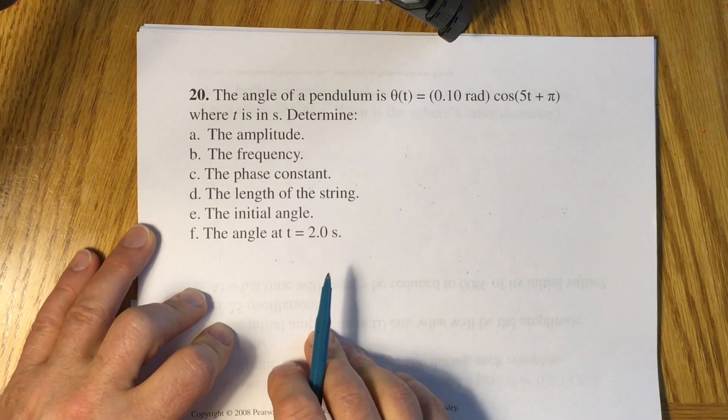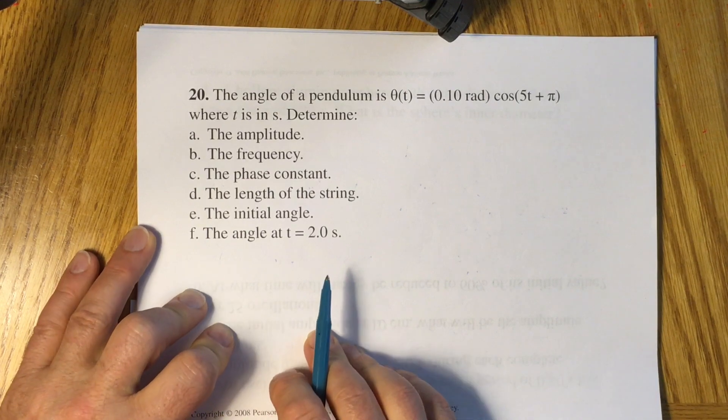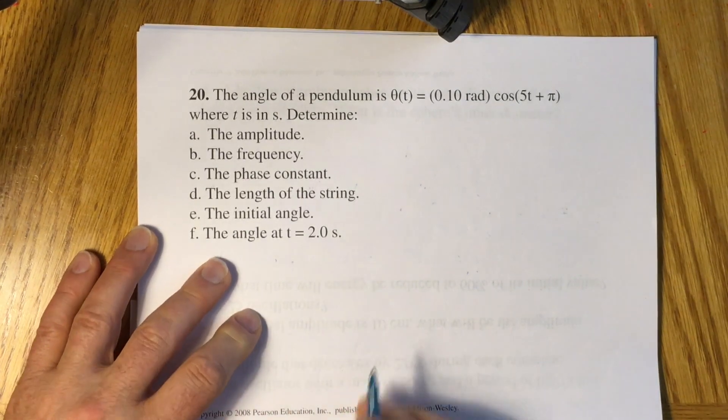You have to determine amplitude, frequency, phase constant, length of the string, initial angle, and angle at t equals 2.0 seconds.